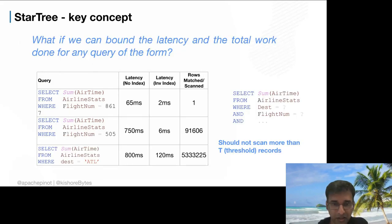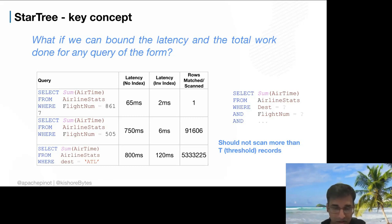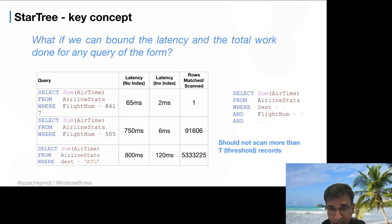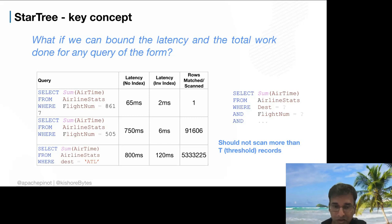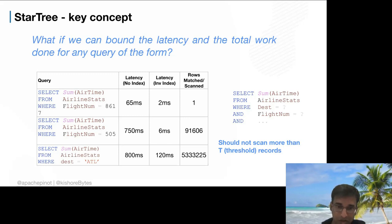The core concept of the star-tree index: instead of letting queries take as long as needed, what if we could completely bound any query of the form 'SELECT SUM(x) FROM table WHERE [any combination of predicates]' to never scan more than T records? One query scans 1 record, another 91K, another 5 million — what if all scanned only 10,000? This is based on the iceberg cubing model of partial aggregates, adapted from a single-node concept into a distributed columnar store.